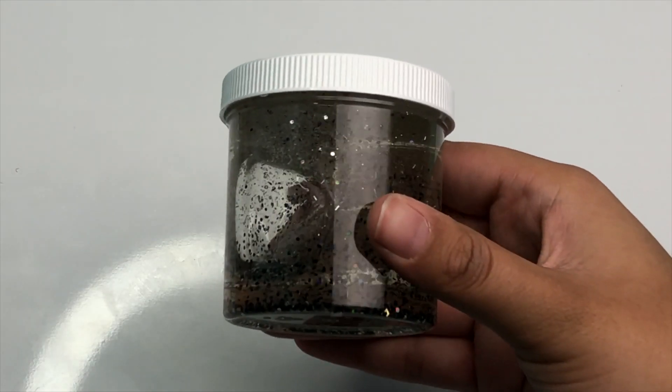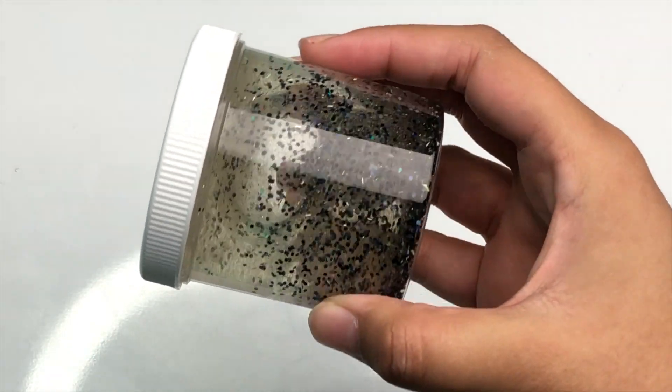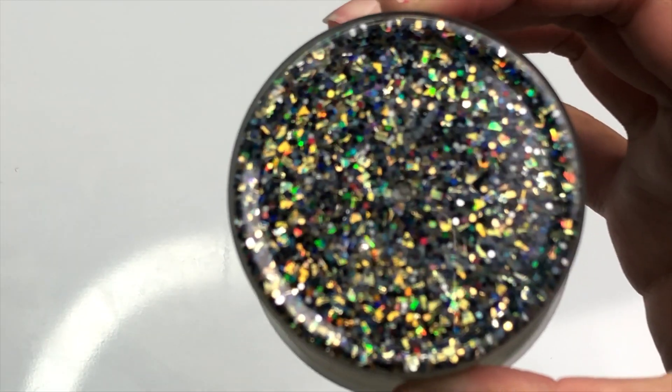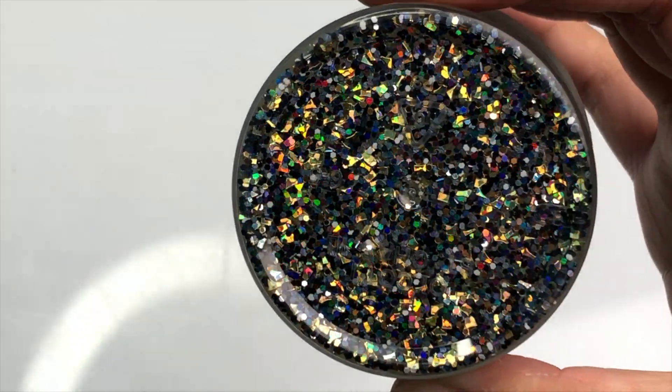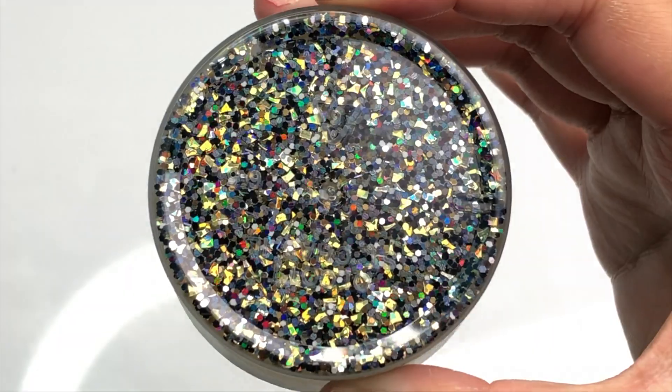The second slime that will come in this box is party popper. This is a clear base with a ton of glitters. There's hollow glitter, there's gold glitter, silver glitter, there's also some white iridescent glitter as well. I didn't poke this because I didn't keep one of these for myself so I didn't want to mess this one up.